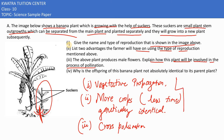The fourth part asks why the offspring of this banana plant is not absolutely identical to the parent plant. This is because there can be some minor changes due to genetic variations.